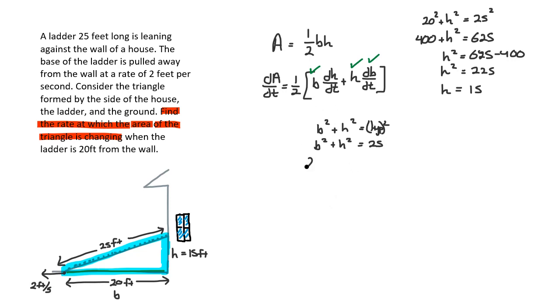The derivative of this equation is 2b db/dt, remember the chain rule, plus 2h dh/dt is equal to zero. Now we know all of these variables, the same variables as before, but this will allow us to find dh/dt. So we'll take that detour real quick and start plugging things in and solving.